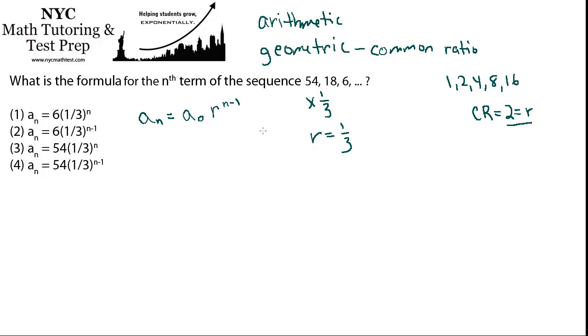Alright, so we already found our r value, we said r equals 1/3. a_0 is the first term, so our first term is 54, so that's our a_0. So that means that our general formula should be a_n equals 54 times our common ratio, 1/3, raised to the n minus 1.